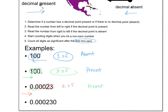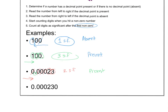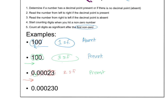For a number like 0.00130 — decimal present, so we read left to right from the Pacific Ocean. Leading zeros don't count; when we hit the first non-zero we count through the end: one, two, three sig figs.